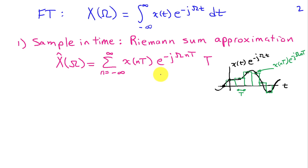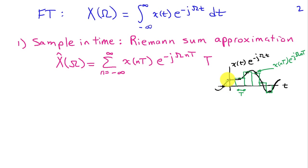If I replace x of t by its samples, I can approximate this integral as the sum from n equals minus infinity to infinity of x of nT times e to the minus j omega nT times T. As shown in the picture, suppose the black curve represents x of t times e to the minus j omega t, the quantity we're integrating. We sample that quantity and approximate the integral by adding up little rectangles of width T.